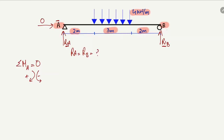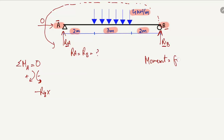Starting from the right side at point B, the force RB acts in the upward direction and produces an anti-clockwise moment about point A. So it will be taken as negative: minus RB multiplied by its moment arm. The moment arm is the perpendicular distance from B to point A, which is 2m plus 3m plus 2m, giving a total of 7 meters.